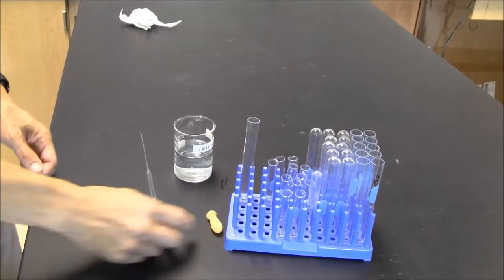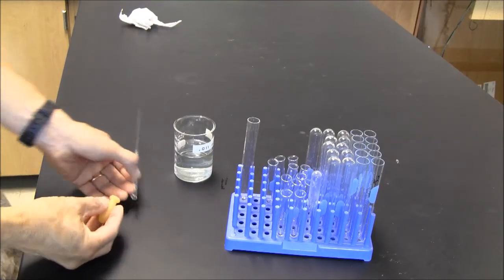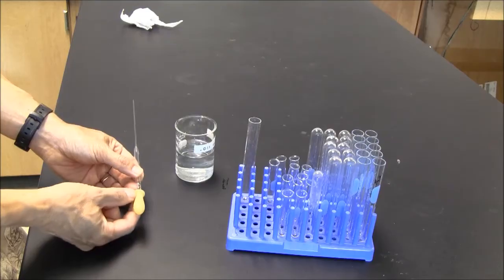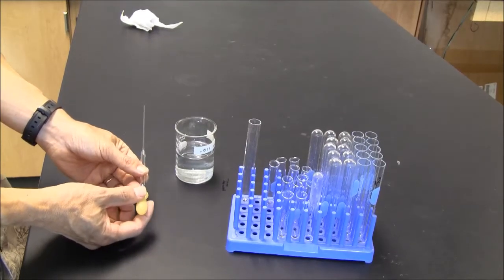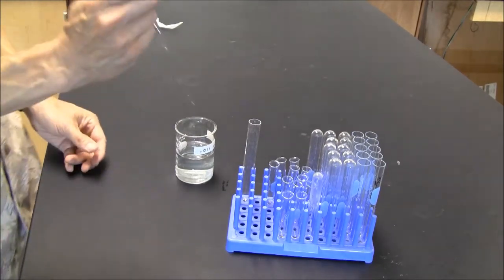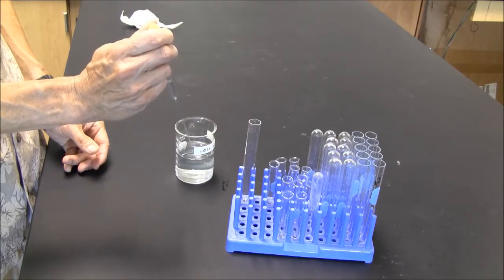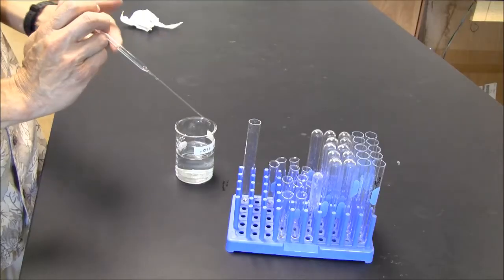When using a Pasteur pipette, first you must attach the bulb to the glass. It should slide on with a little difficulty. Don't need to push it on very far. Next, the tip of the pipette can be immersed in the liquid, and you can see the liquid gets drawn up.